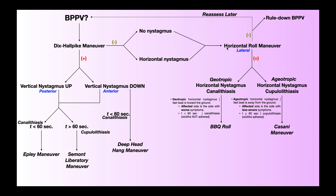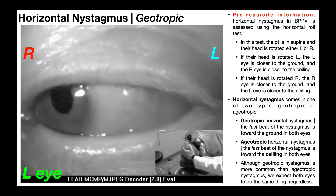The horizontal roll test is specific for the lateral — also called the horizontal — semicircular canal. Horizontal nystagmus in BPPV is assessed using this test. In this test, the patient is going to be in supine, on their back, with their head rotated either left or right.